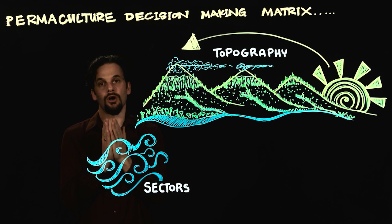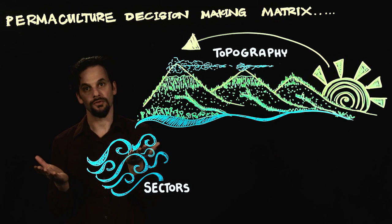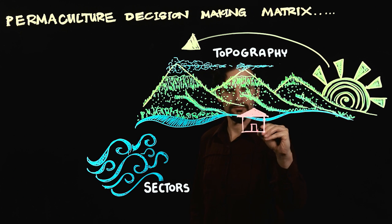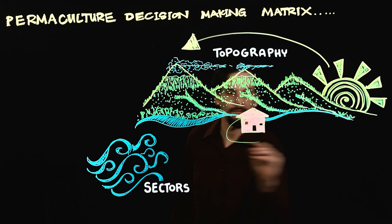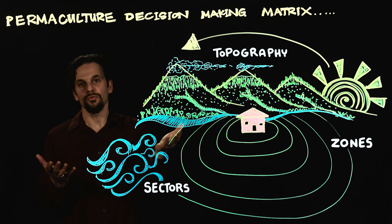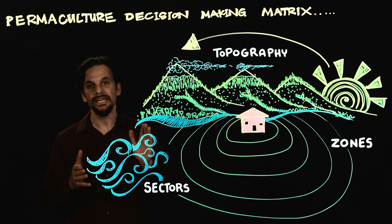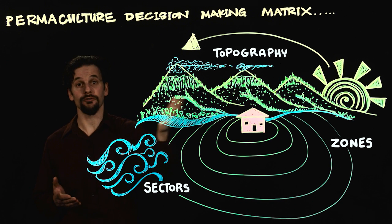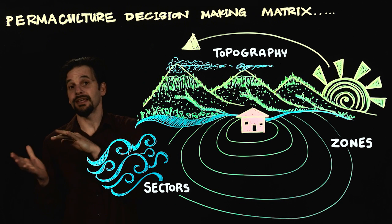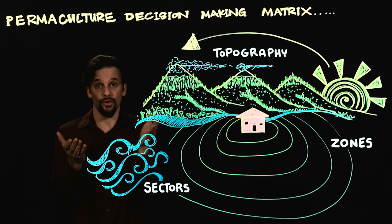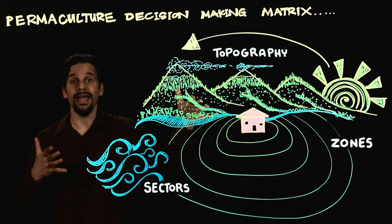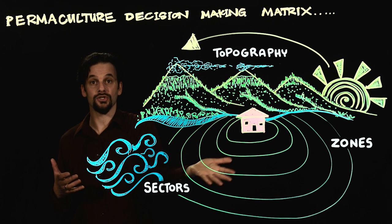The next element is what we call the permaculture zones. Zones have to do with how people move throughout a site and the placement of elements in relation to their proximity to the center of human activity, from things that require daily attention that are close in, all the way to areas that are left wild and untouched that are farther out.